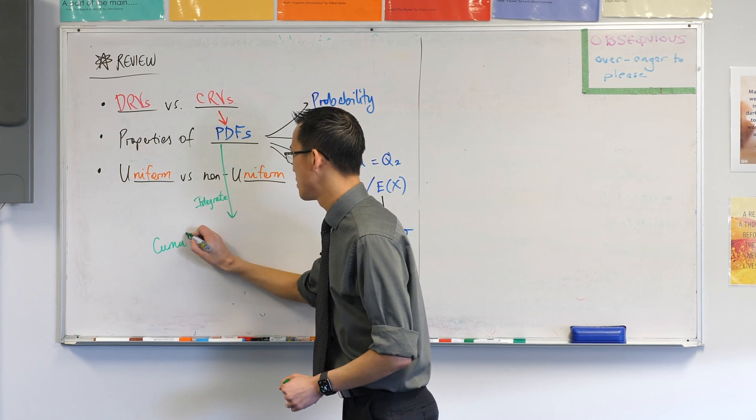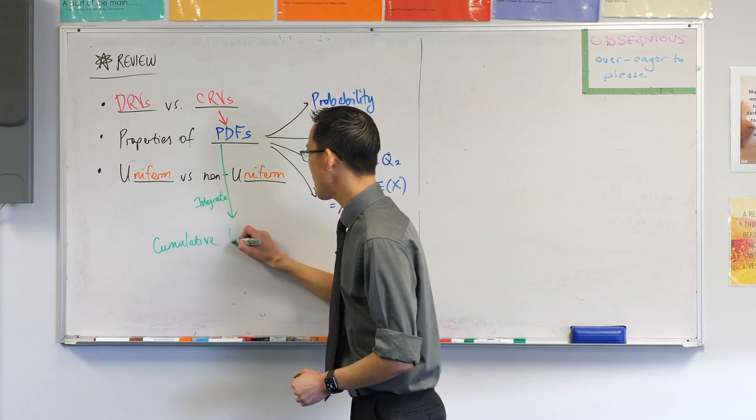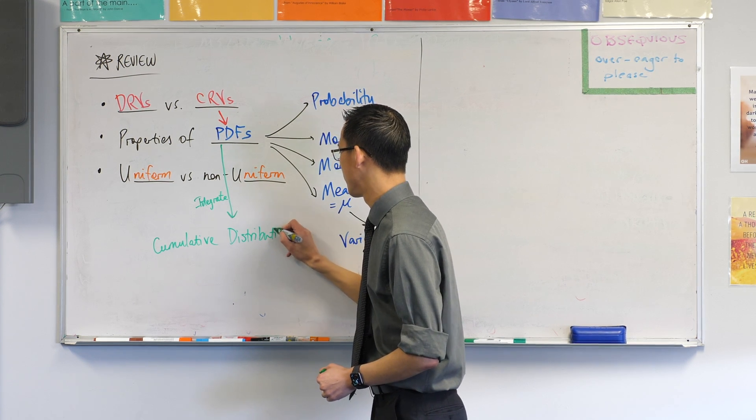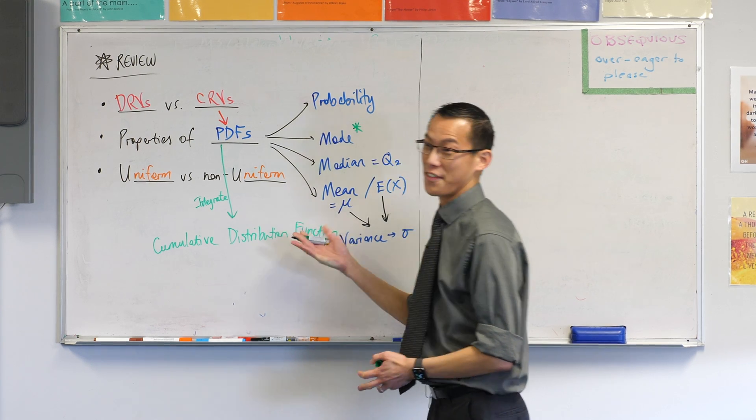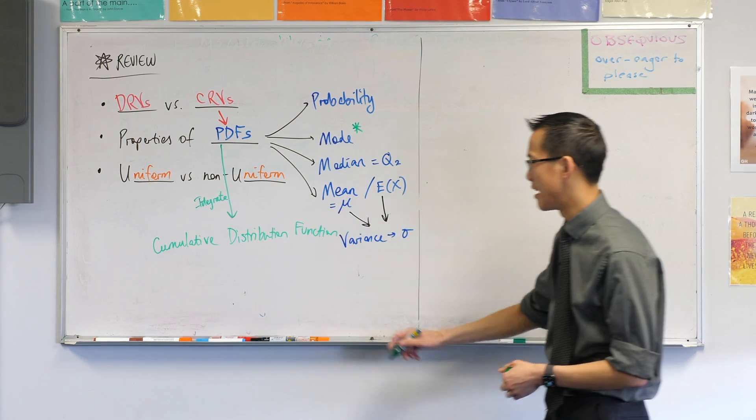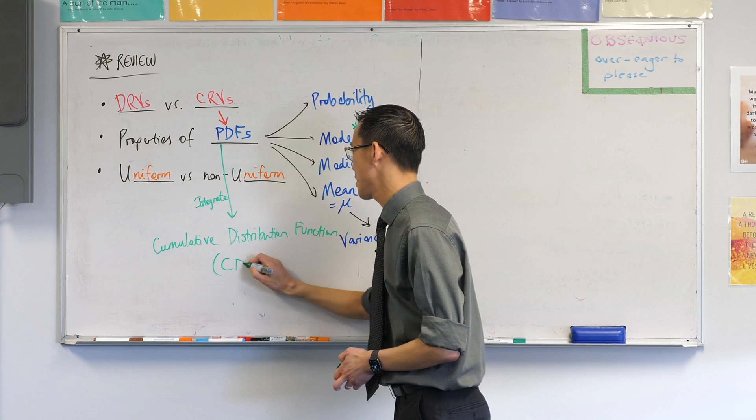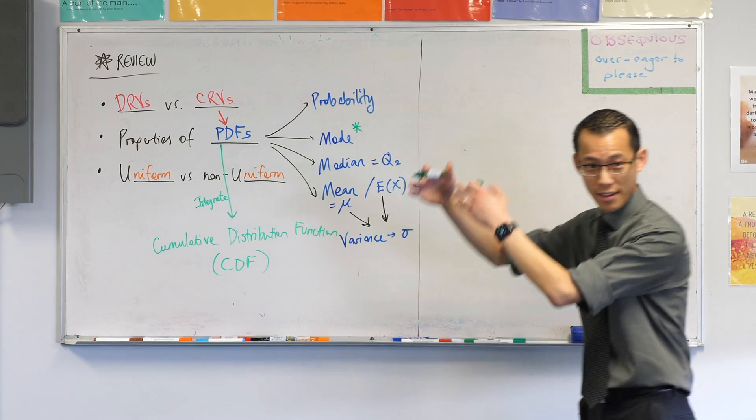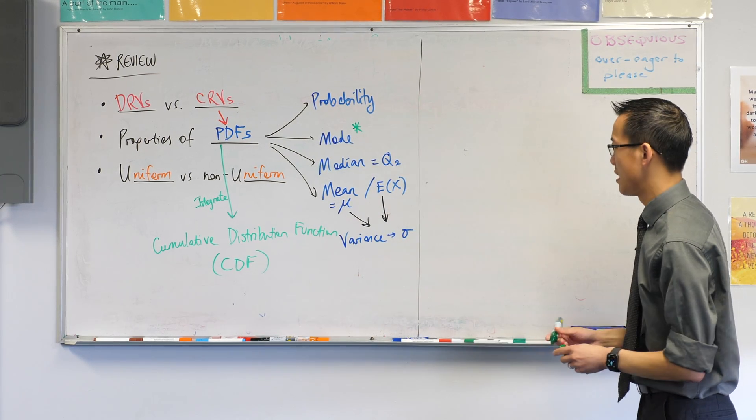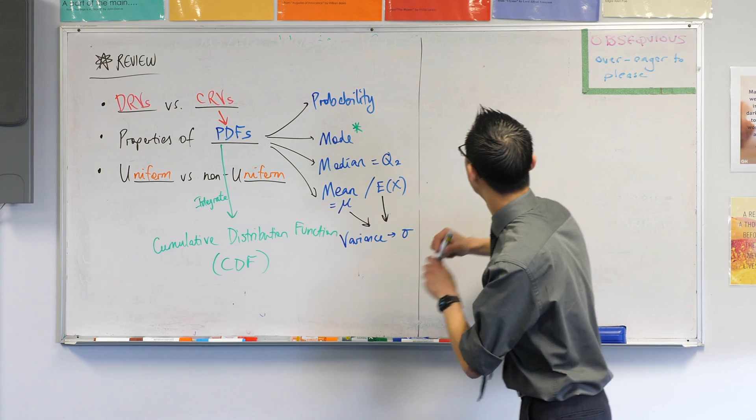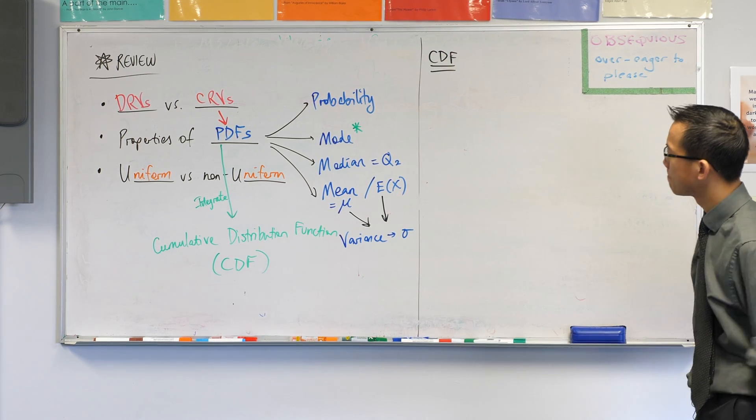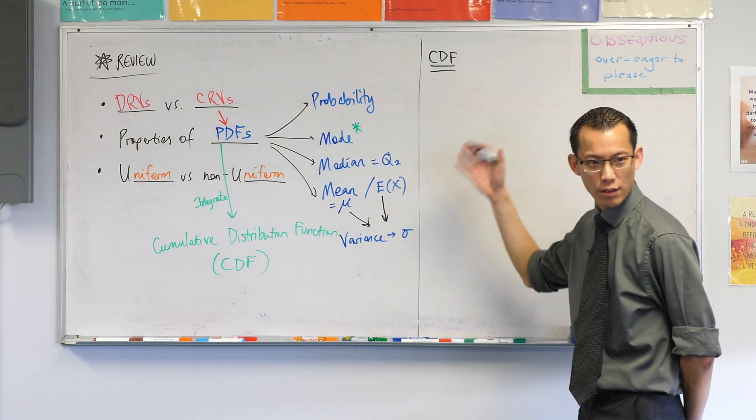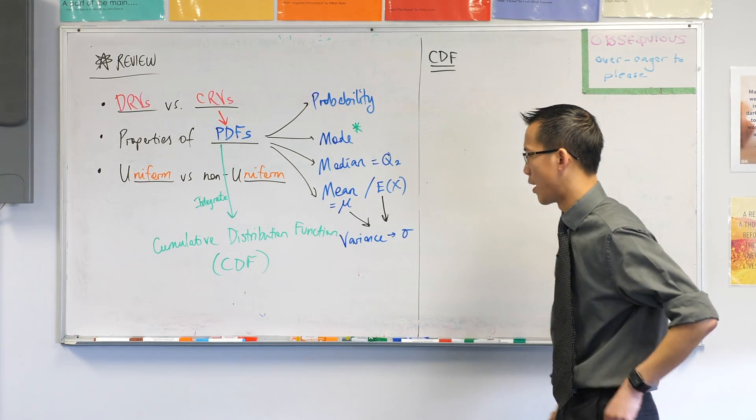So the heading you can make is cumulative distribution function. If you integrate a function, you're going to get another function, right? So this is called the CDF. PDF integrates up into the CDF. So this is our heading for today.